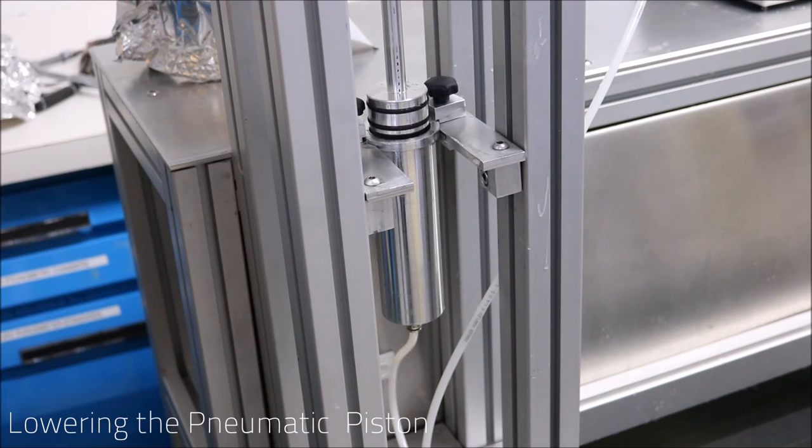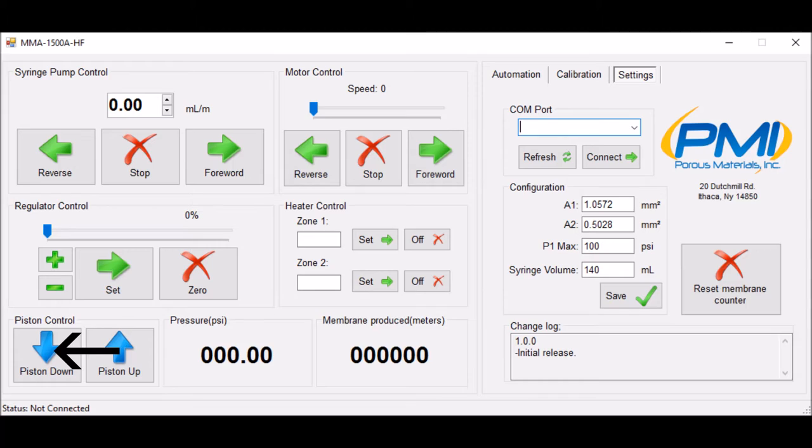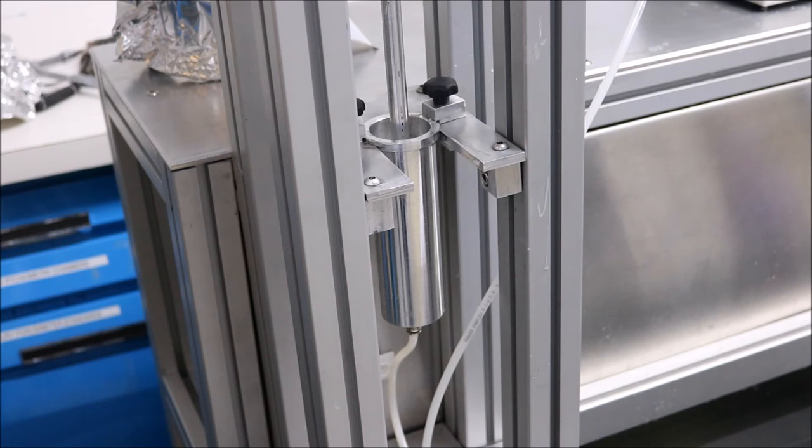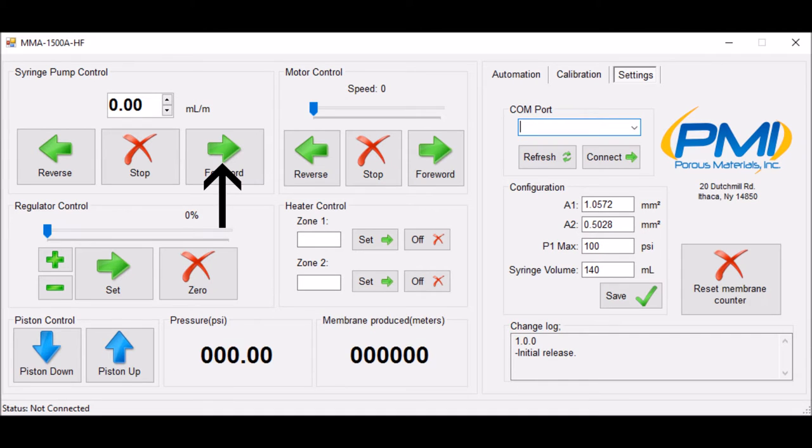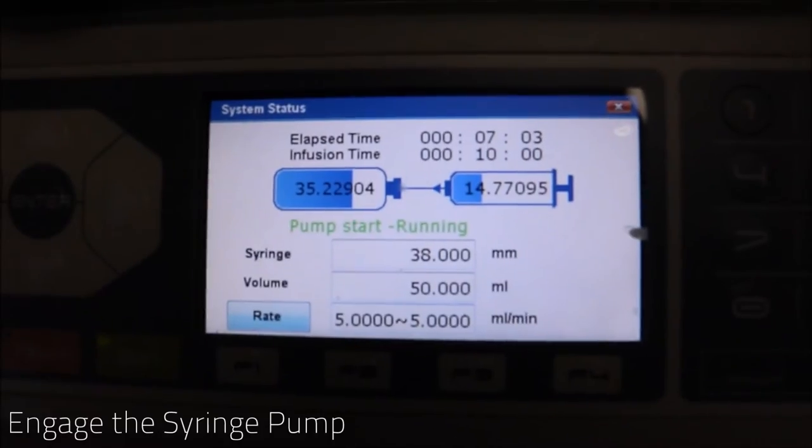Now we must engage the pneumatic piston, and then the syringe pump. Simply use the manual control panel to select the down arrow to begin moving the pneumatic piston down. Then we will tell the syringe pump piston to begin moving forward.